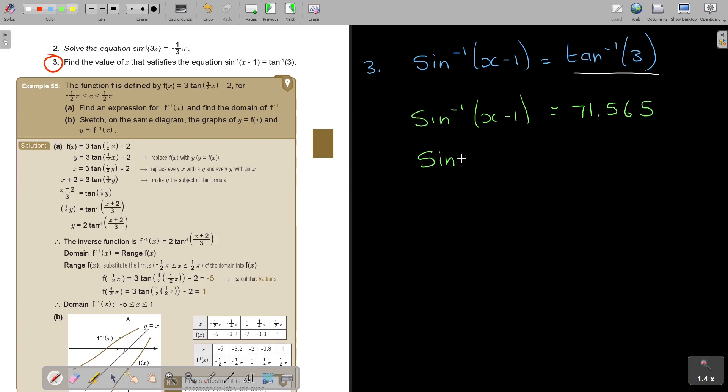Now you can do the swap. You can say sin 71.565 equals x minus 1. And now, again, you can press this on the calculator. To get x, you're basically just going to say sin 71.565 plus that 1 and press it on your calculator. Sin 71.565 equals plus 1 equals. And therefore, x is 1.95 correct to 3 significant figures.